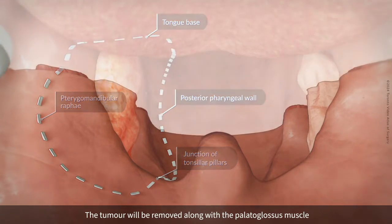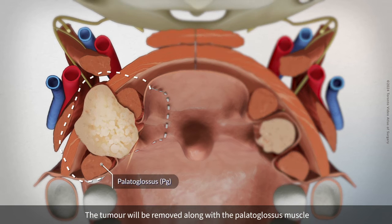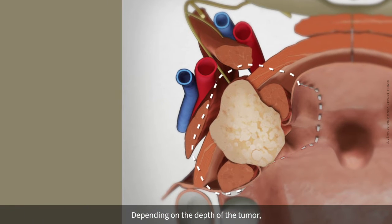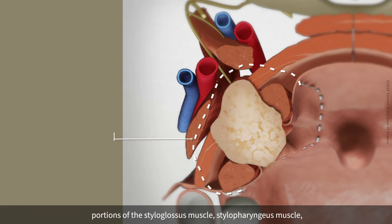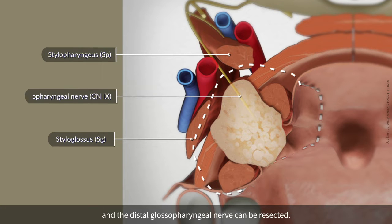The tumor will be removed along with the palatoglossus muscle, the palatopharyngeus muscle, and the superior constrictor muscle. Depending on the depth of the tumor, portions of the styloglossus muscle, stylopharyngeus muscle, and the distal glossopharyngeal nerve can also be resected.